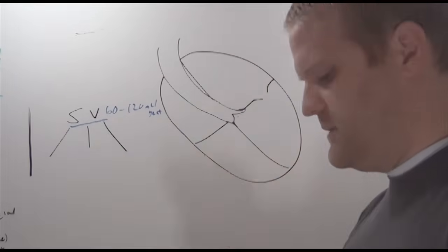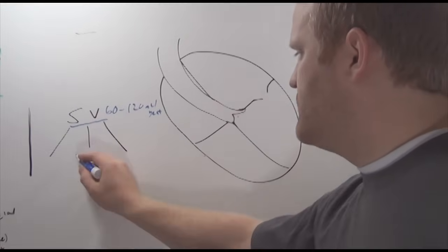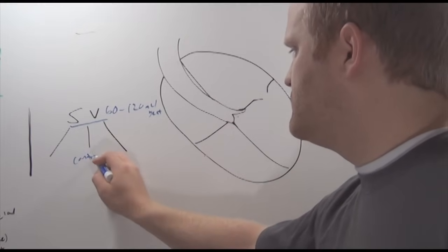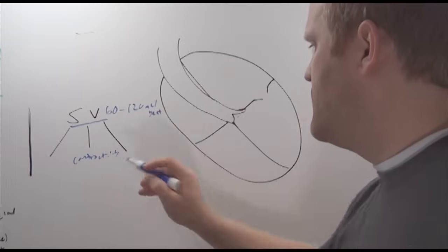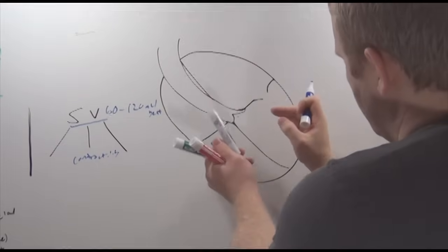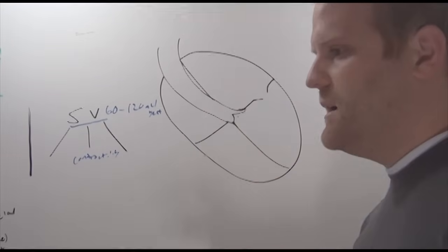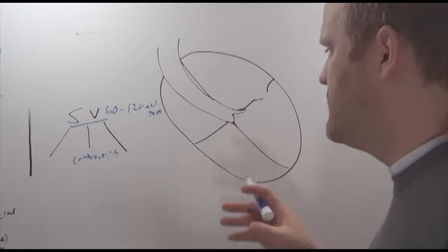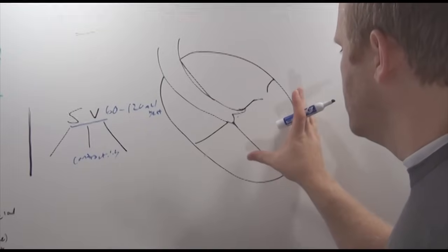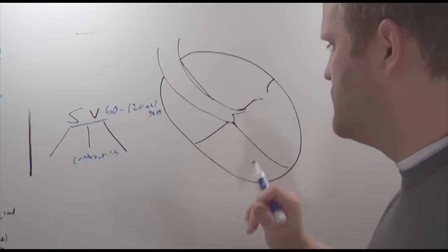And there's three things that affect stroke volume. First is going to be contractility, and contractility is really the squeeze of these ventricles. How hard are these ventricles squeezing to push blood out? We can talk later about things that will affect that, but it's really the squeeze of these ventricles.